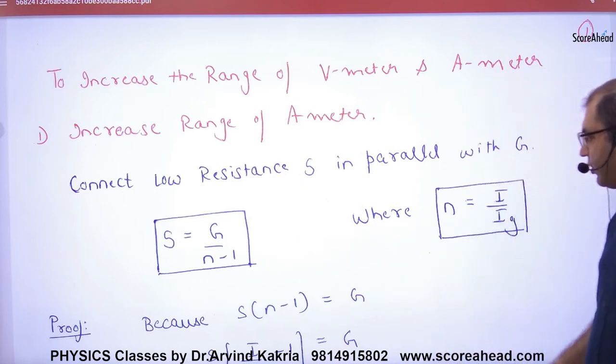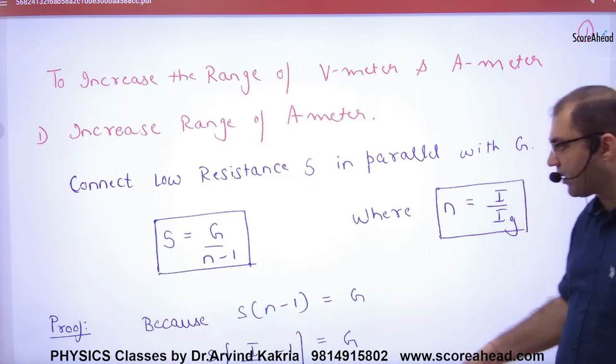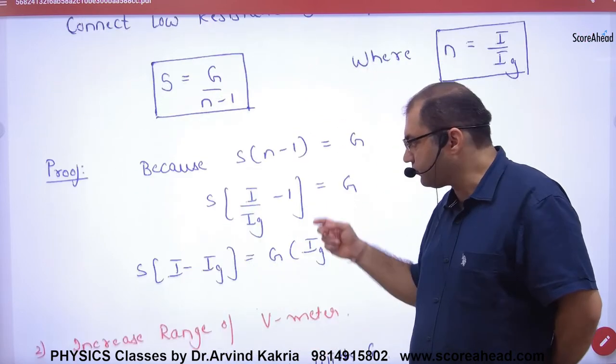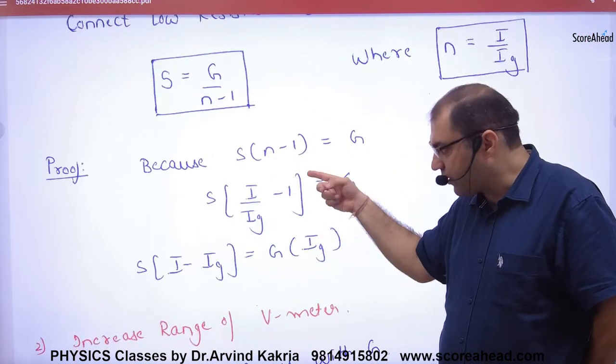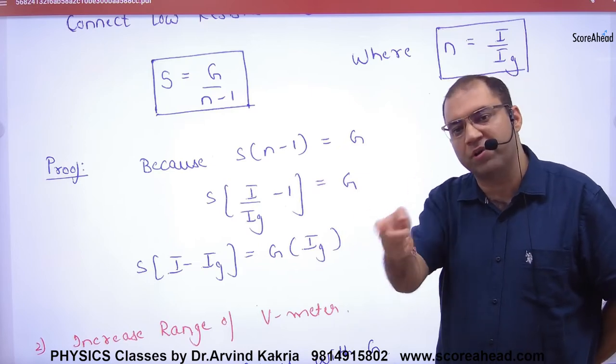Where N equals the range of ammeter over the galvanometer current (I/IG). When we solve it, then the shunt formula will be (IG × G)/(I - IG), which we have already derived.